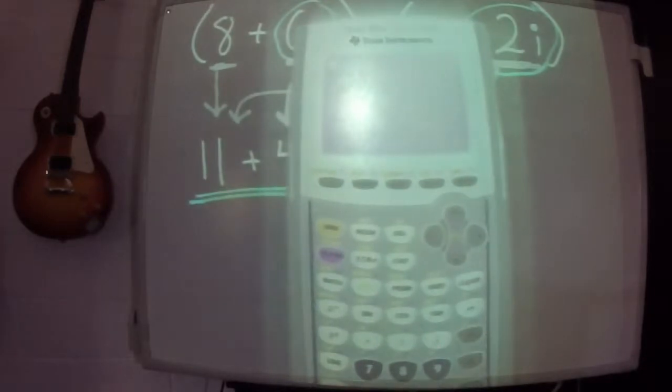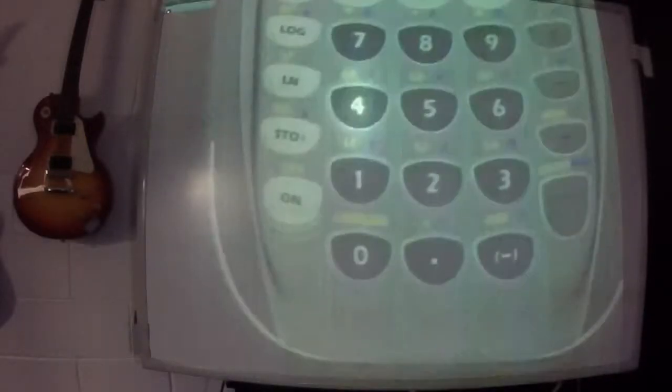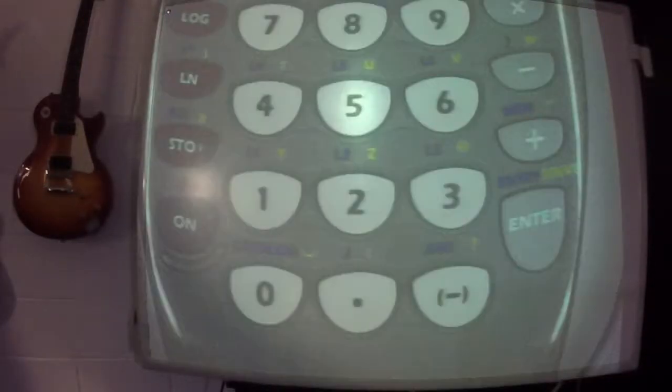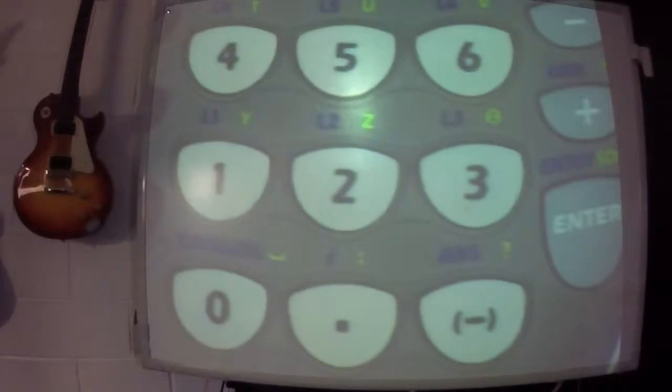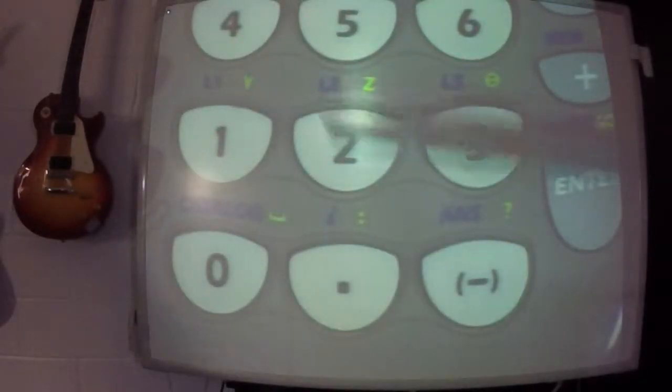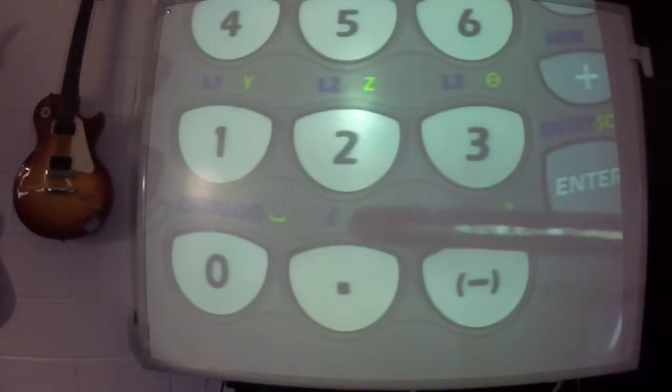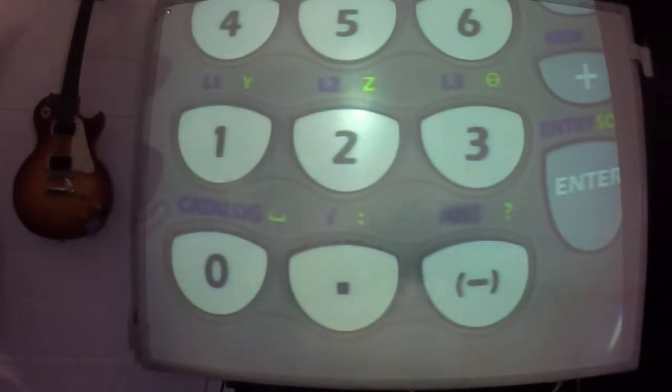Now, the reason why this might help is there's nothing we're going to graph here. But that letter i, that means imaginary, is located at the bottom of your calculator. Right here, above the decimal point. You'll have to hit second to use it.